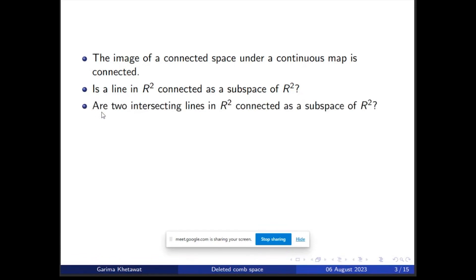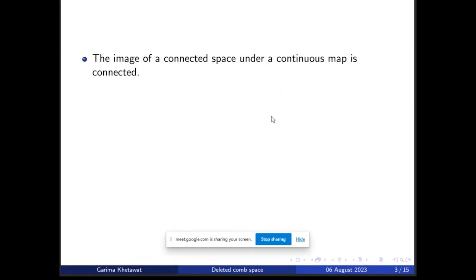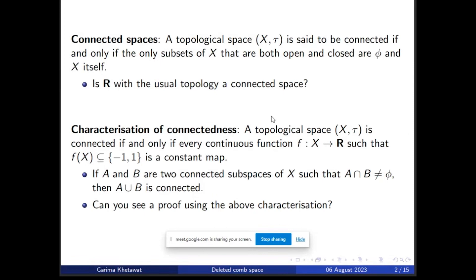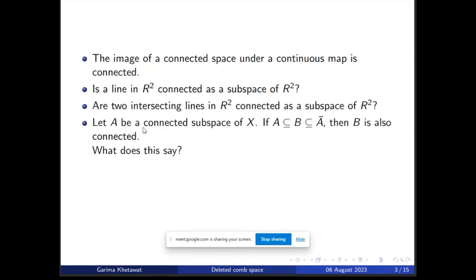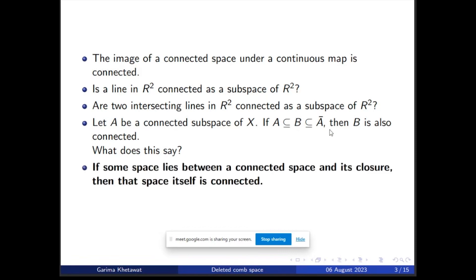The next question is: are two intersecting lines in ℝ² connected as a subspace of ℝ²? The answer is yes, because we have seen that a line is connected, and from the previous property, if the intersection is non-empty their union is also connected. Next, if A is a connected subspace of X and a set B lies between A and its closure, then B is also connected. This property will be needed very much when we discuss the comb space.